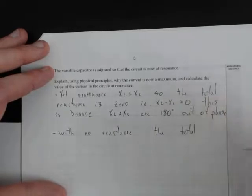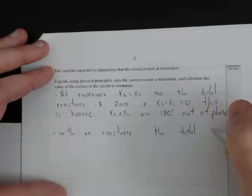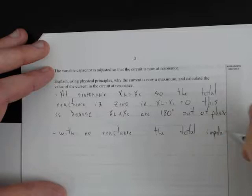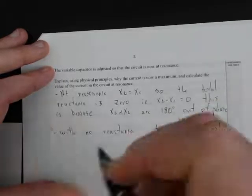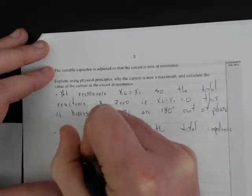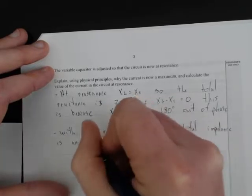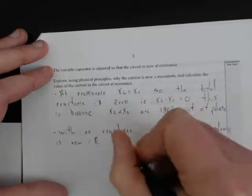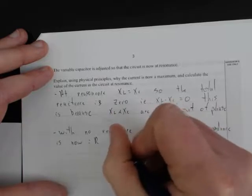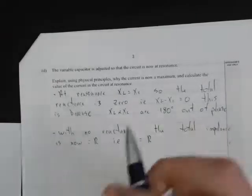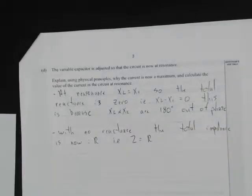The total impedance, which is just the sum of all the resistances and the reactances in the circuit, is now equal to R. That is, Z is now equal to R.